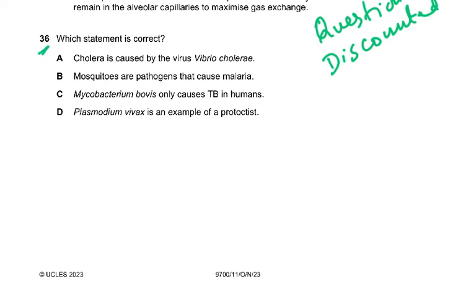Question number 36. Which statement is correct? Cholera is caused by a virus — no, cholera is caused by bacteria, Vibrio cholerae. Mosquitoes are pathogens — no, mosquitoes are vectors, Plasmodium is the pathogen. Mycobacterium bovis only causes TB in cattle, not in humans. So the only correct answer is D — Plasmodium vivax is an example of a protoctist. It's not a bacteria, it's not a virus, it is a protoctist. You study this in A2 in great detail.